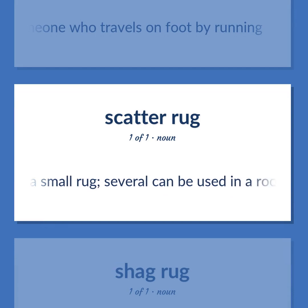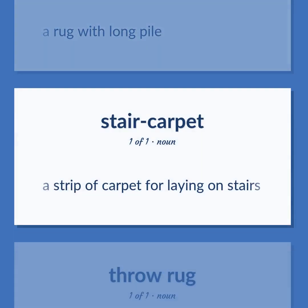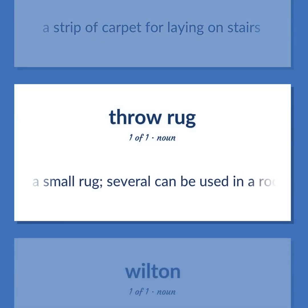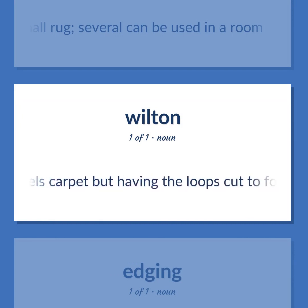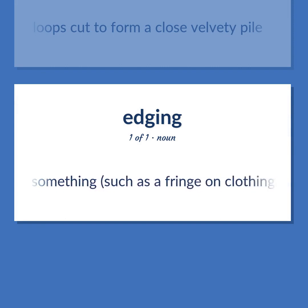A small rug; several can be used in a room. A rug with long pile. A strip of carpet for laying on stairs. A carpet woven on a jacquard loom with loops like a Brussels carpet but having the loops cut to form a close velvety pile. A border consisting of anything placed on the edge to finish something, such as a fringe on clothing or on a rug.